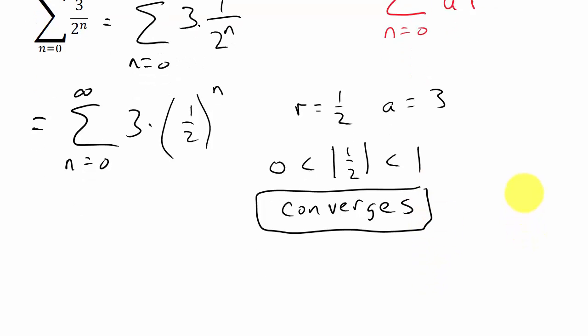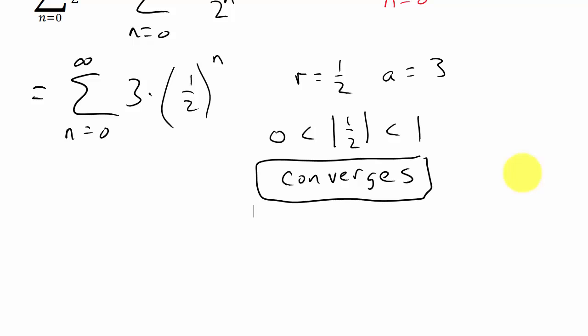And then we can also see that it converges to S equals A over one minus R. So A is three, and then one minus R is one half, so this is three over one half, which is three times the reciprocal of one half. Remember how to divide. So that's three times two, which equals six.